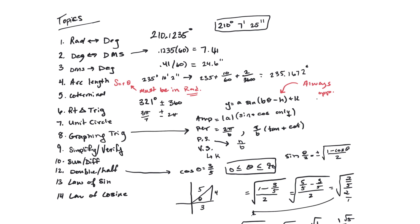Number one is angle measurements. We talked about going from degrees to radians, radians to degrees, and degrees-minutes-seconds. To go from radians to degrees, multiply your radian measure by 180 degrees over pi. To go from degrees back to radians, multiply the degree measure by pi over 180 and simplify. Always keep them in fractional form — radians always have something pi over something, especially important on a multiple choice test.